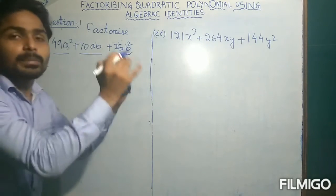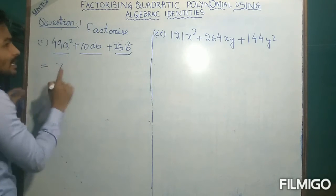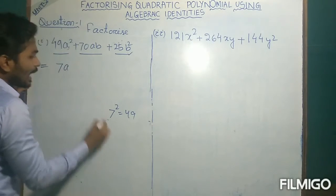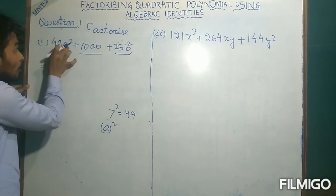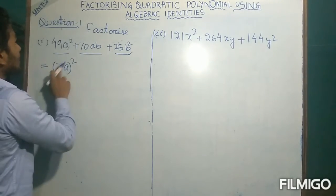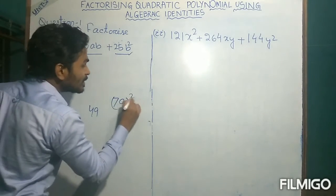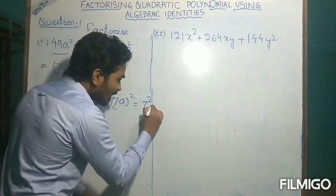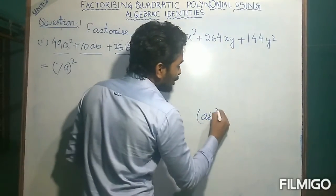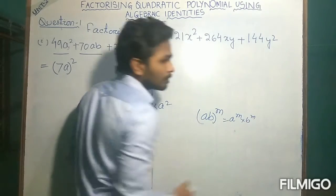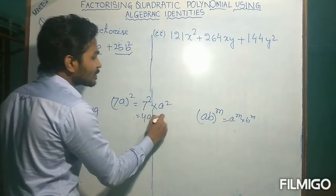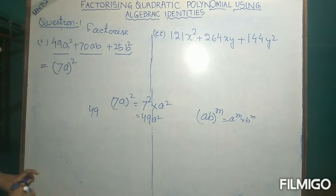First, convert 49 to be the square of some number. As we know, 49 can be written as 7², because 7² is 49. And a² can be written as a². So 49a² can be written as (7a)², because 7a whole square means 7² into a², which by exponent rules equals 49 · a². So 49a² equals (7a)².